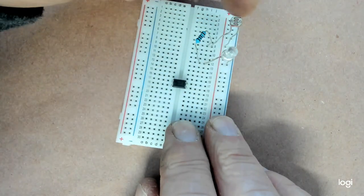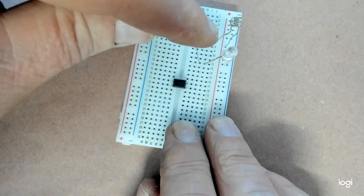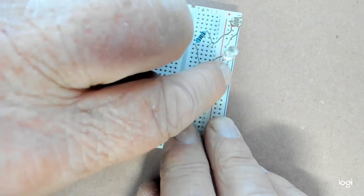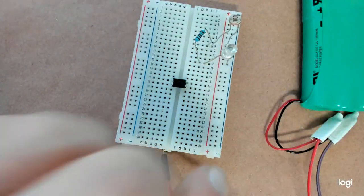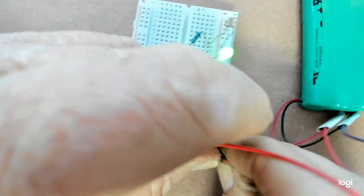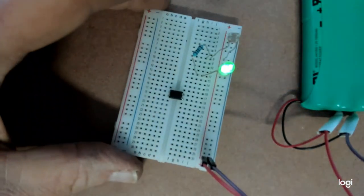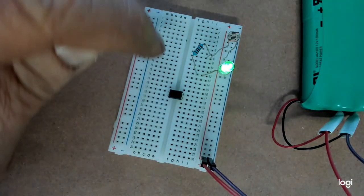Or the other way around, it's going to go from positive through the photo, through the current limiter, through the LED, and then to ground. Now, let me give it some power. Okay, so now, you've got a completed circuit.